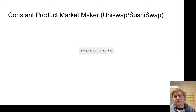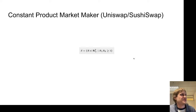The simplest constant function market maker is probably Uniswap v1 — the constant product market maker. We have this equation: R1 times R2 is greater than or equal to 1. If we zoom out of this equation into this plot, this is what the plot of Uniswap looks like. If you've spent any time in DeFi, you've probably seen a plot that looks something like this.